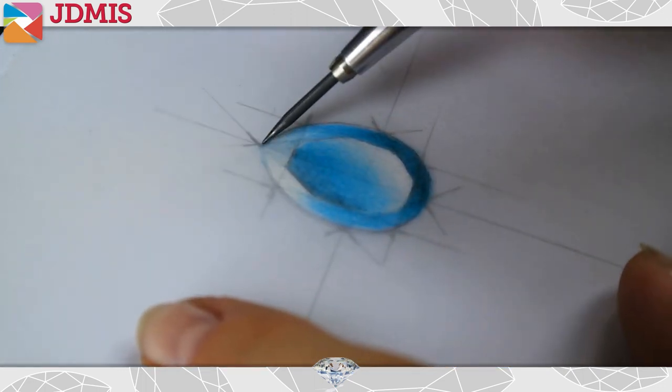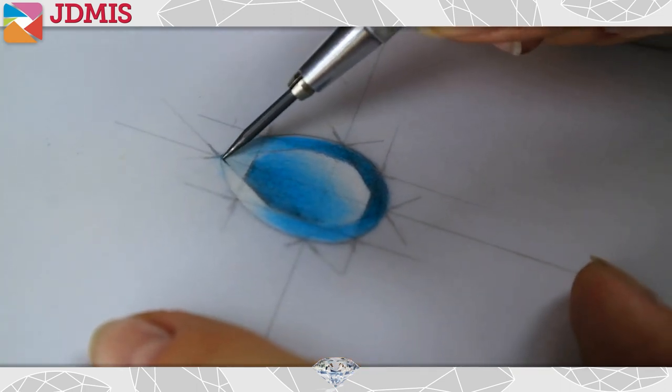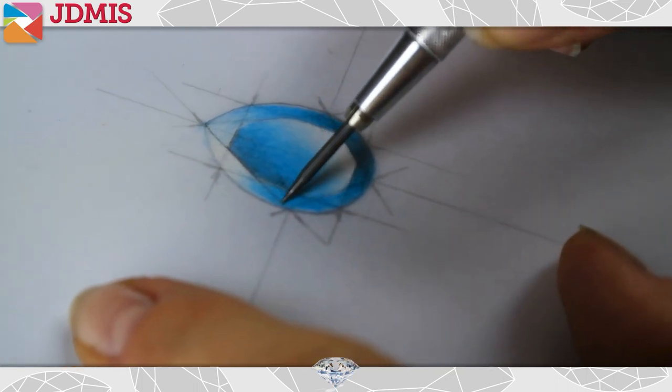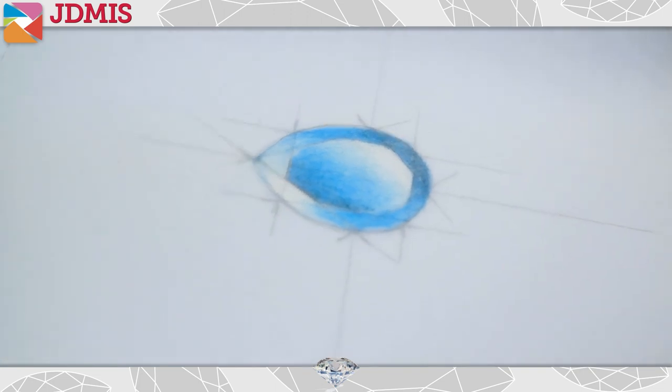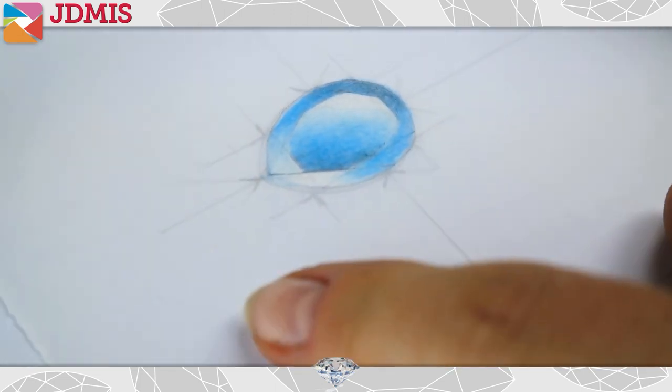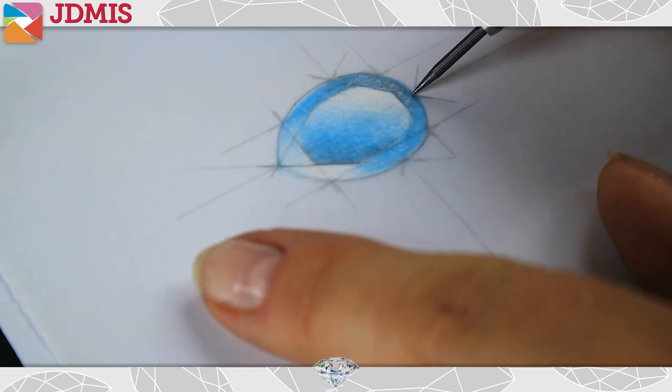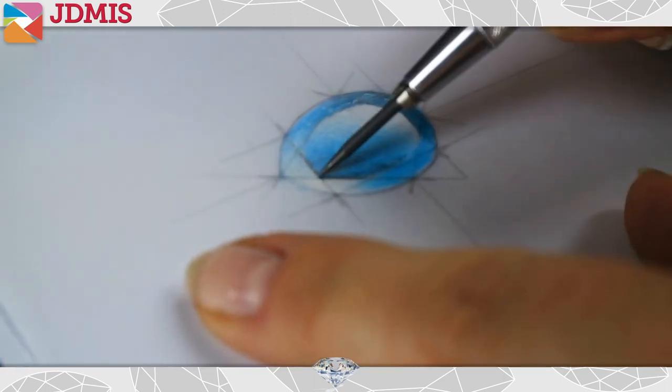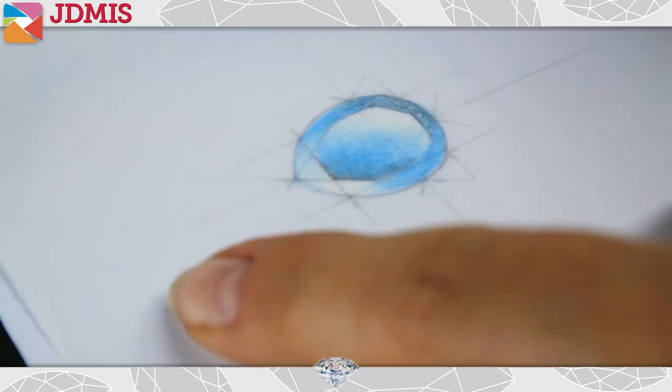With a very sharp 2H pencil, we can start to put those lines in the right places. Just remember as you do this, good table to crown definition is key. I like to turn my paper as I work. If I turn the paper, my hand is always comfortable. If my hand is always comfortable, I'll be able to do a great job to bring those facets right up to the edges that they need to touch.